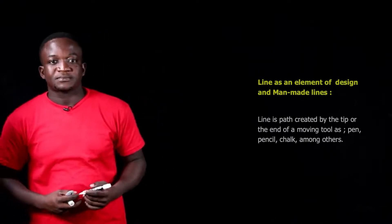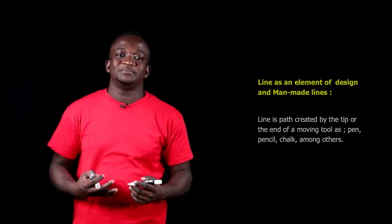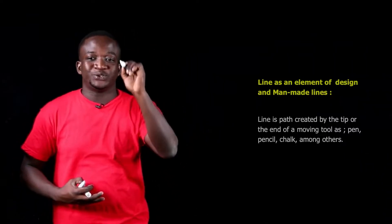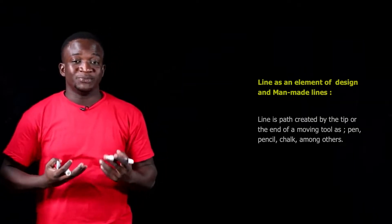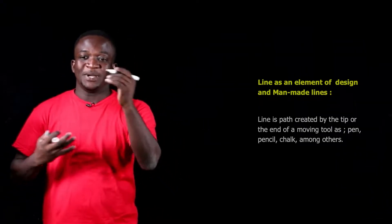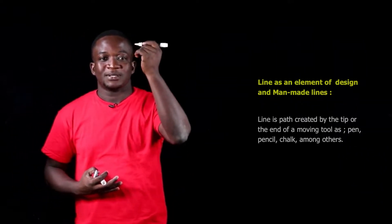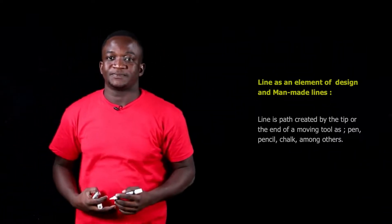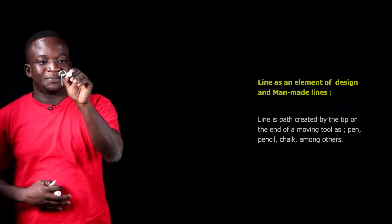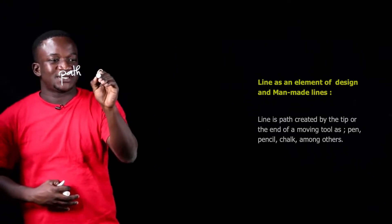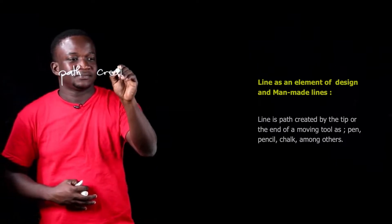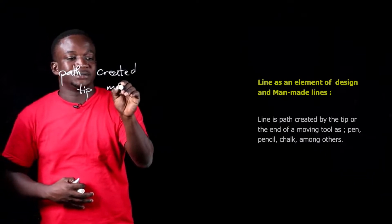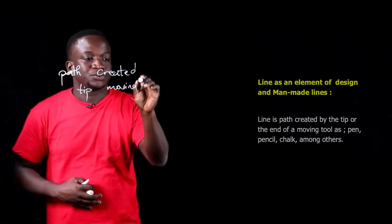Now, line. A line is a path created by the tip or the end of a moving tool. Some examples of this moving tool are the pen, the marker, the chalk, among others. So, it's a path created by the tip of a moving tool.